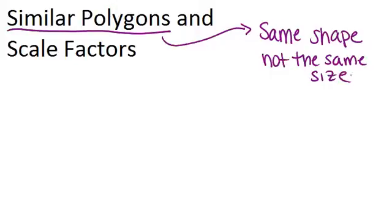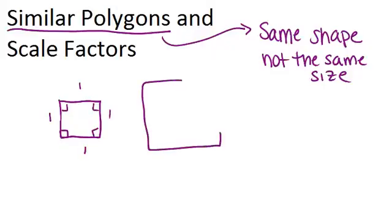So, for example, these two squares, the first square which has all side lengths of 1, and the second square which has all side lengths of 2, these two shapes would be similar because they're both squares but different sizes.